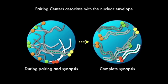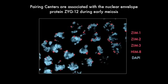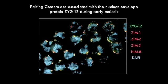Our first insight came from the observation that the sites where pairing centers contact the nuclear envelope, here marked with antibodies against the four pairing center proteins ZIM1, 2, 3, and HIM8, are highly enriched in a nuclear envelope protein called ZYG12.